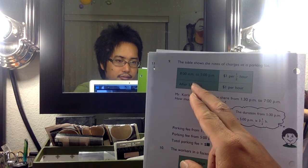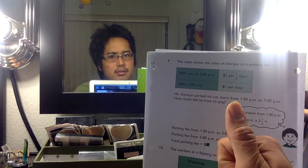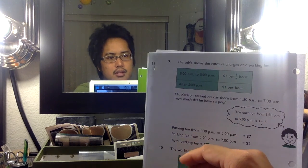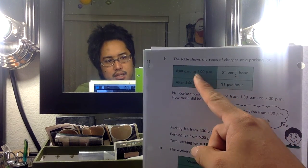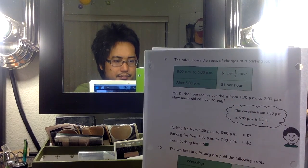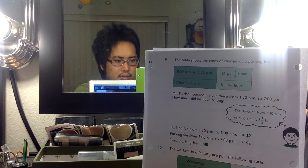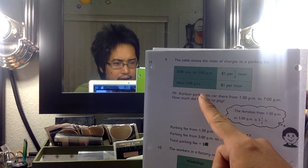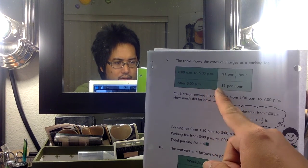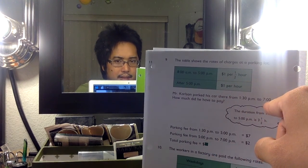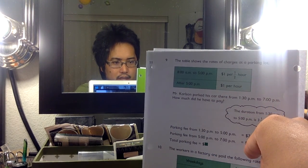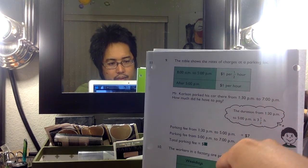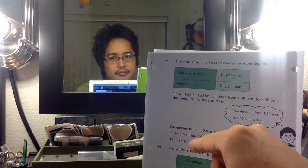So he was there from 1:30. Let's see, 2 o'clock would be the extra 30 minutes, and then 3 o'clock, 4 o'clock, 5 o'clock. So 3 and a half hours he was there paying this rate. That would be $7 total. And then after 5 p.m., he stayed another 2 hours extra because he went from 5 p.m. to 7 p.m., so he had $2 extra. So he paid $7 plus an extra $2. His total amount that he had to fork out was $9 for that day of parking.